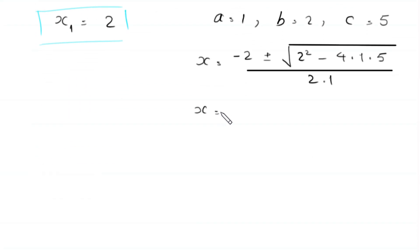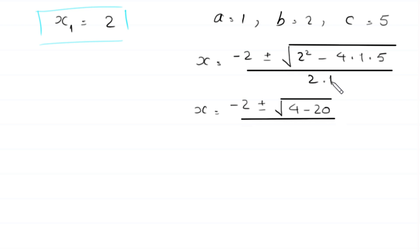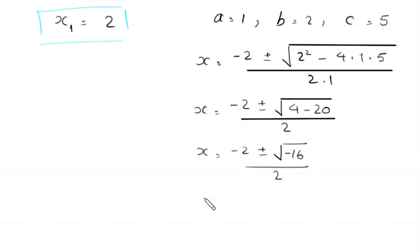Next, x is equal to negative 2 plus or minus square root of 2 squared, which is 4, minus 4 times 1 times 5, which is negative 20, divided by 2 times 1, which is 2. So x is equal to negative 2 plus or minus square root of 4 minus 20, which is negative 16, divided by 2. And x is equal to negative 2 plus or minus, and this square root of negative 16 can be written as square root of 16 times square root of negative 1.